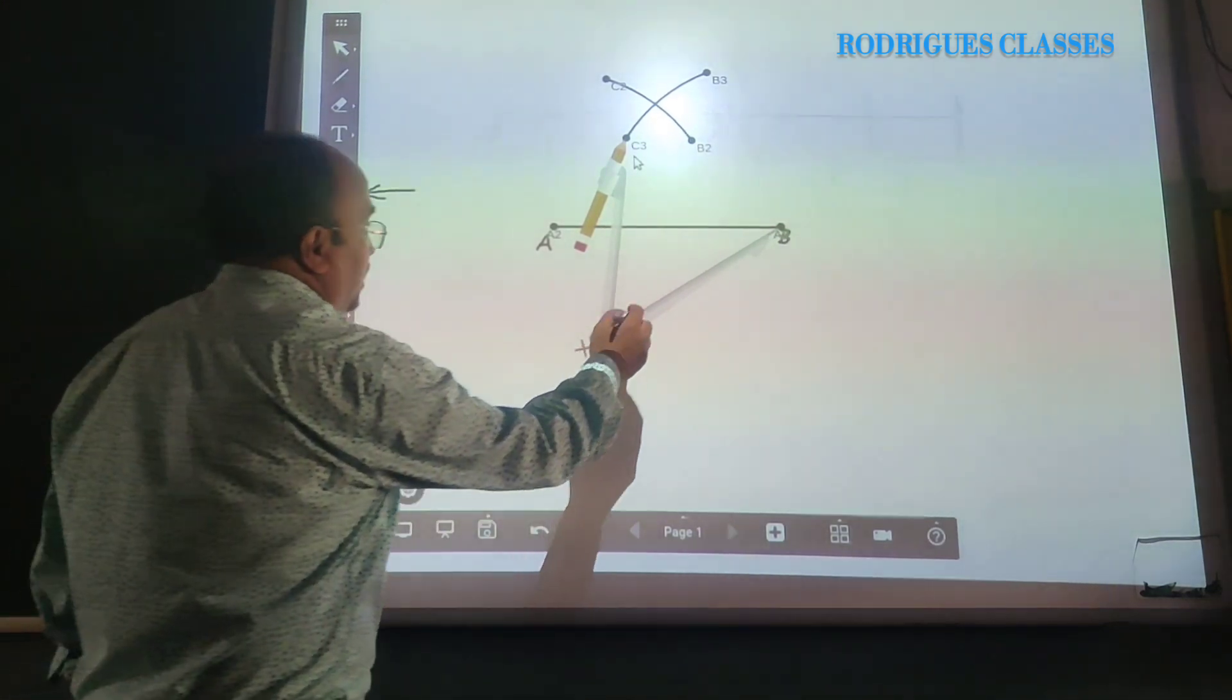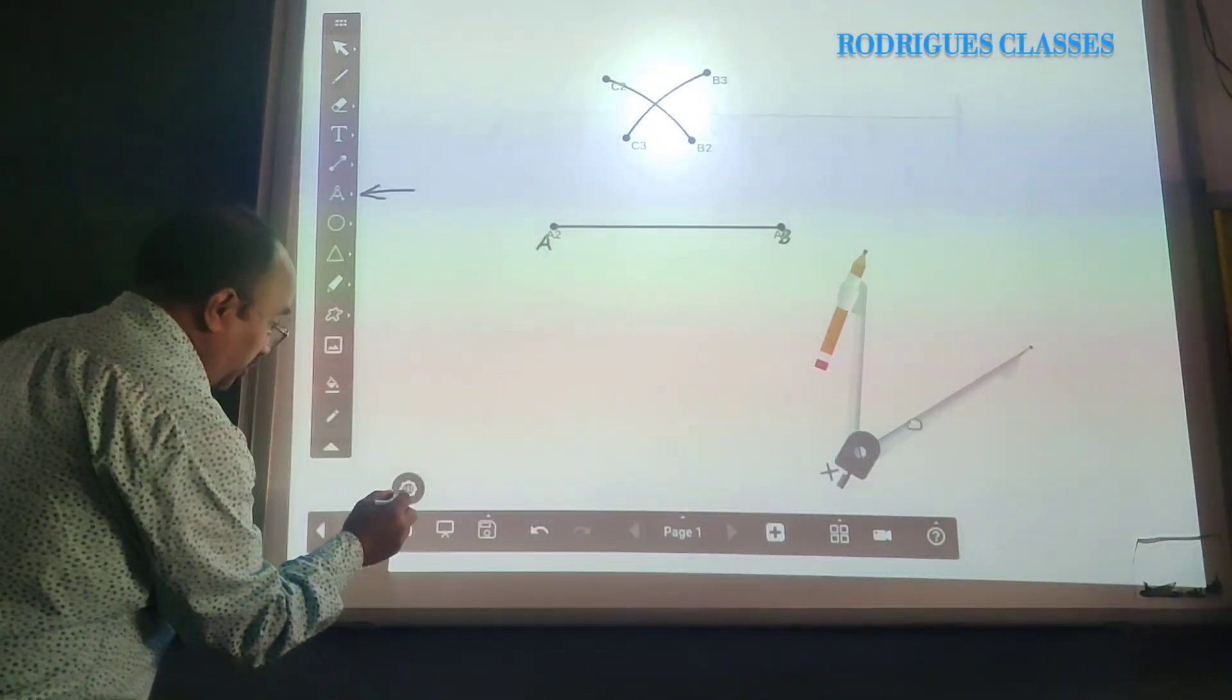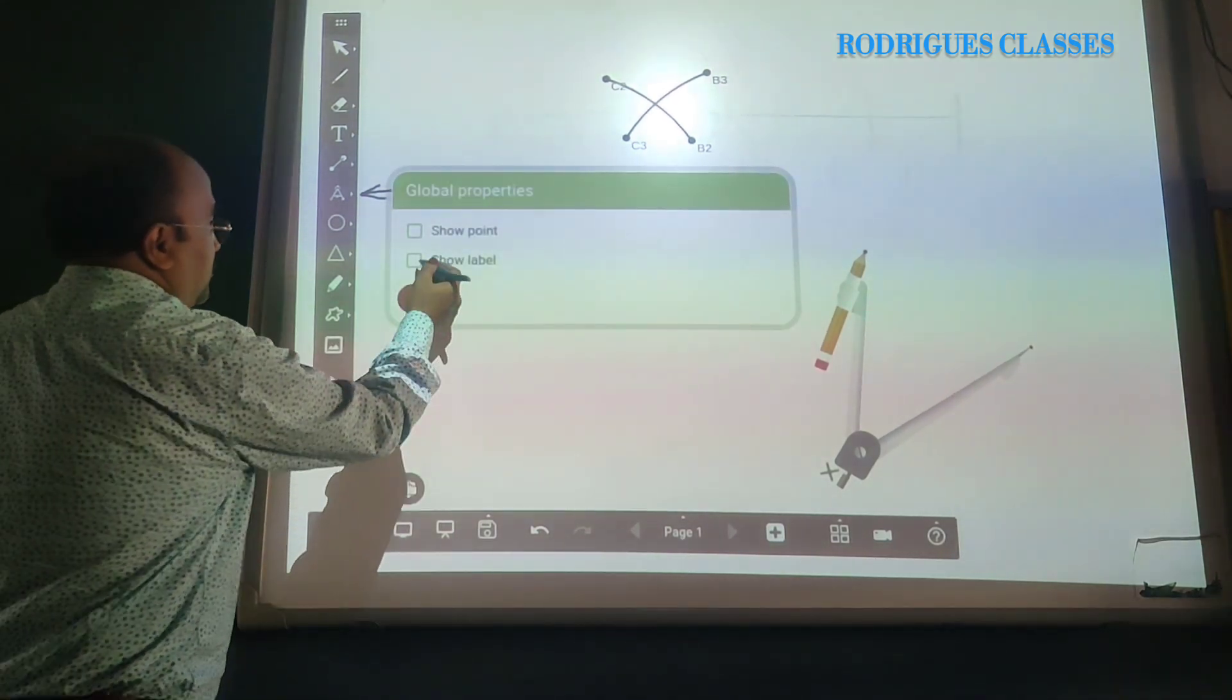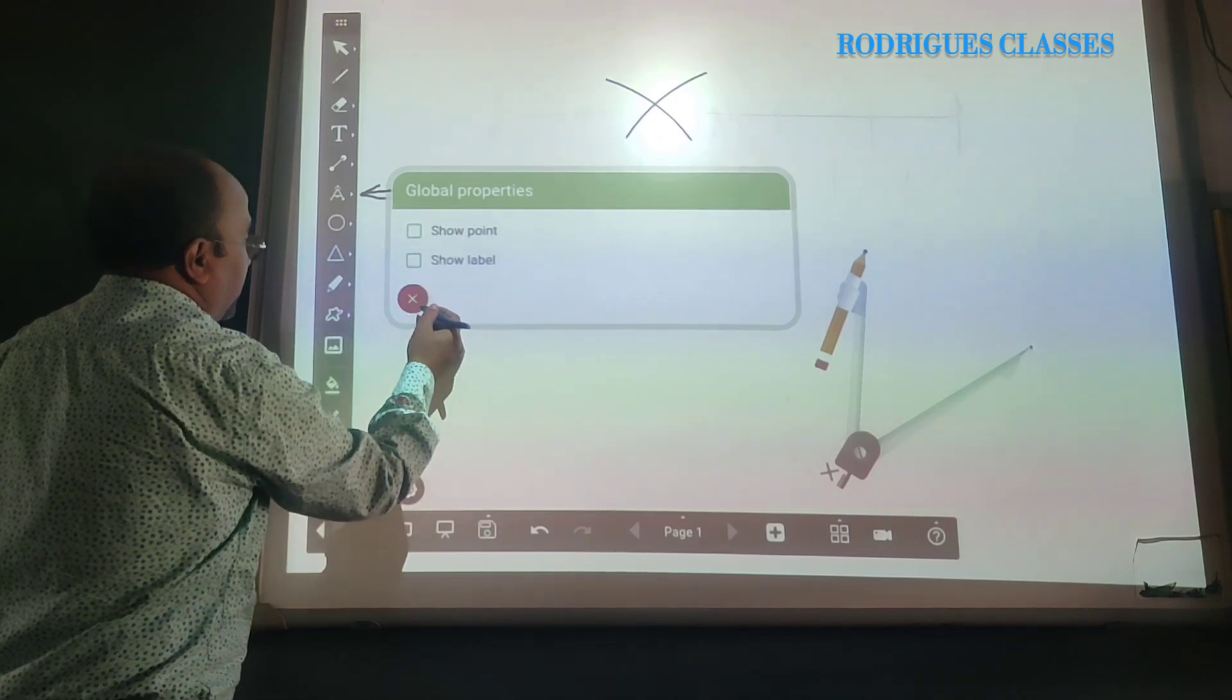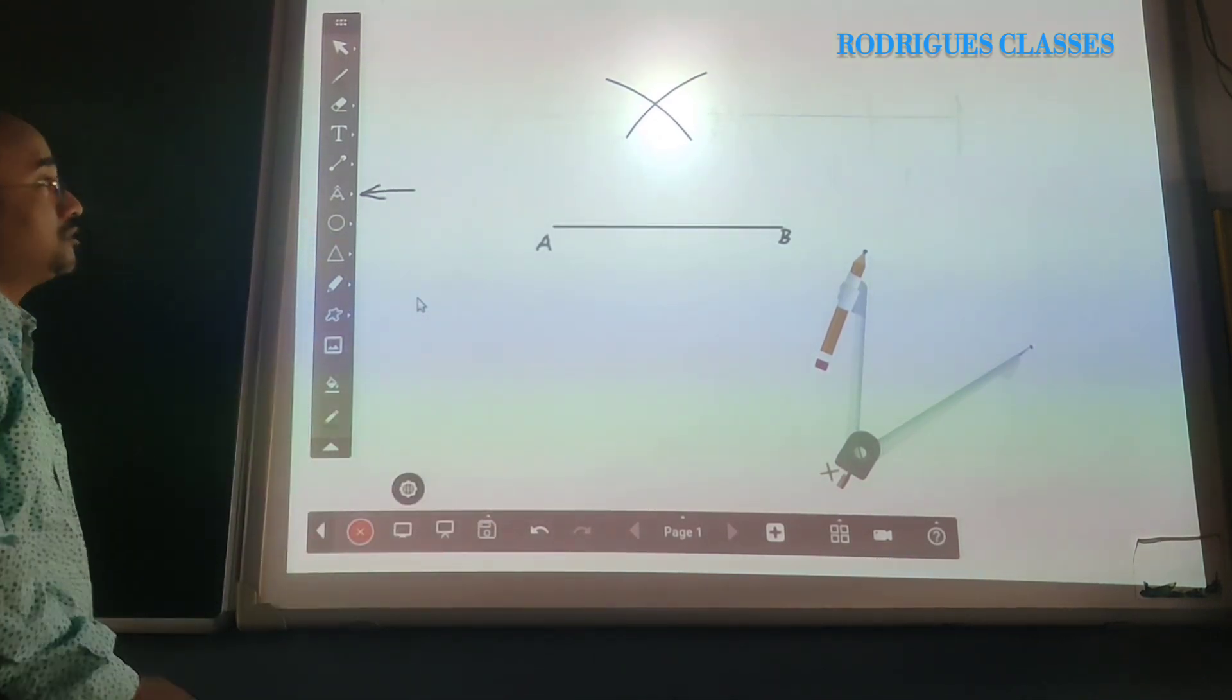So, again those arcs which are there, I will remove it. Again, going to the same place. Show label, tick marks again removed, and you get this correct.